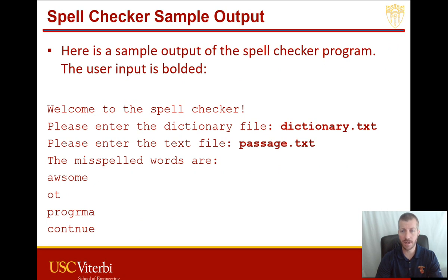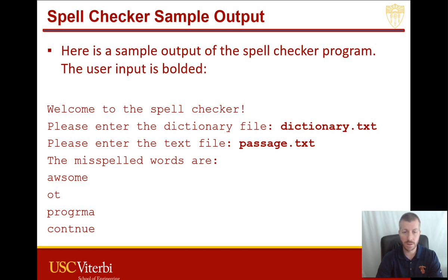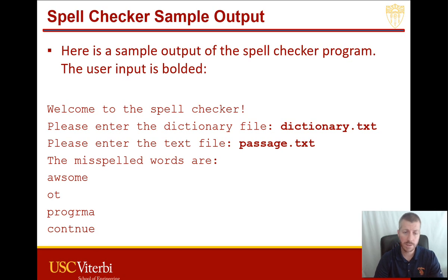Here's a sample output of our spell checker program. I've bolded the user input. First it's going to say 'Welcome to the spell checker. Please enter the dictionary file.' Then the user types the name of the dictionary file. It then says 'Enter the text file,' and in this example I've entered passage.txt. At that point all the processing takes place, and then it prints out 'The misspelled words are,' followed by four misspelled words in this example.